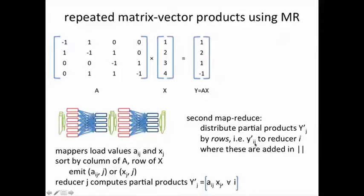So the idea is that these now will get distributed by rows. So part of this will go to one reducer—say the first two rows—second two rows will go to another reducer, and then they'll get added up over there in parallel.